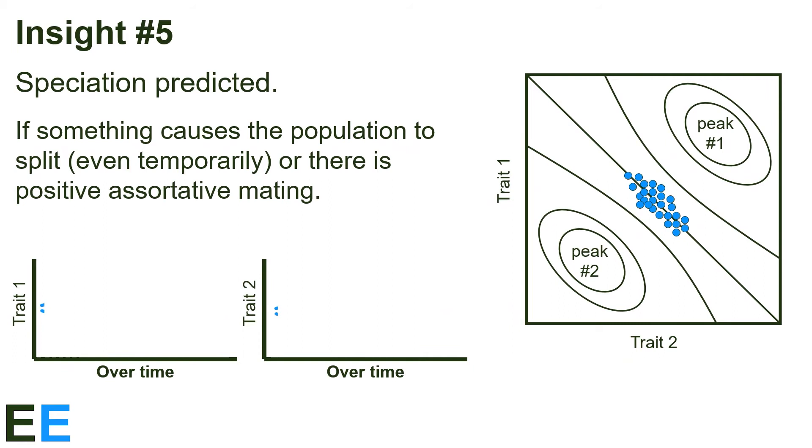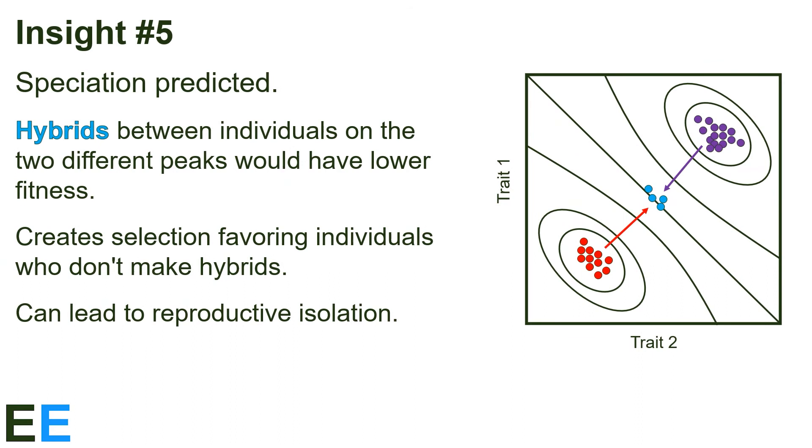Our previous example leads us to this fifth insight. Speciation is predicted on certain landscapes. Imagine we had a single big population in some fitness valley. If something causes the population to split, even temporarily, or there is positive assortative mating, then there might be something almost like two different populations, even if only for a few breeding seasons. If that happens, and the two subpopulations evolve in different directions, then they will end up looking quite different from one another. A single population with individuals that all looked similar has become two different populations that look different. That's the start of speciation.